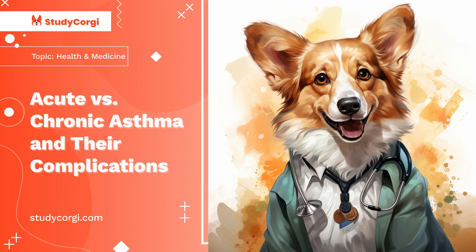Acute asthma and chronic asthma are closely related variants of asthma, which is an inflammatory disease that affects the flow of air in the lungs. The obstruction of airflow in the lungs leads to different symptoms including wheezing, coughing, tightness, and pain in the chest, and shortness of breath.